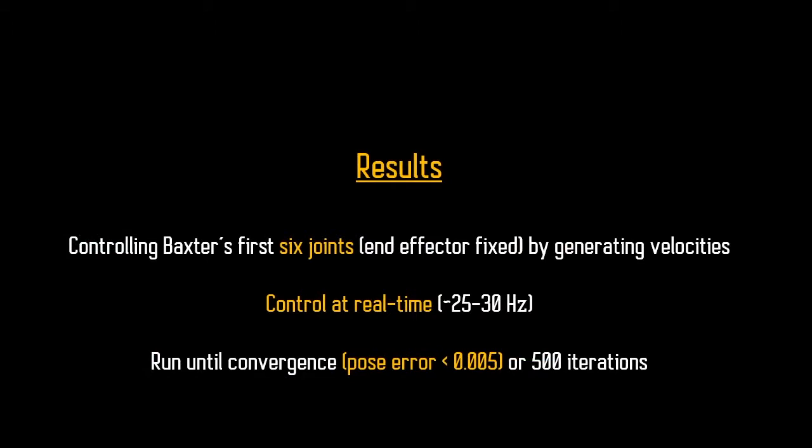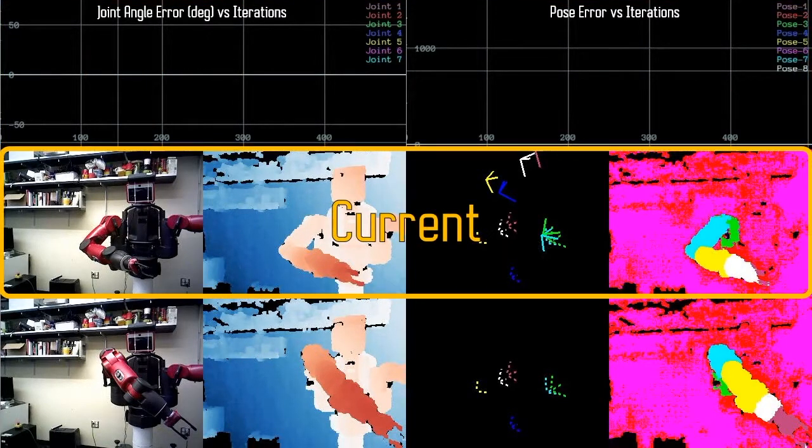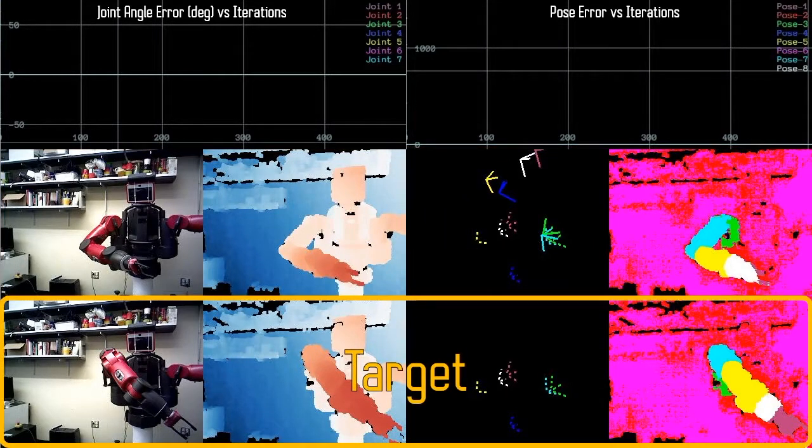We now present results on controlling the first six joints of the Baxter robot in real-time. Top row shows the error and joint angles and poses over time. Center row shows the current inputs and predictions. Bottom row shows the target data.